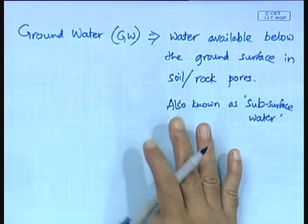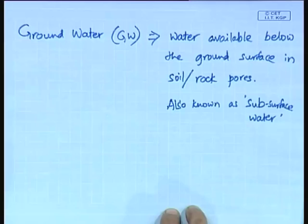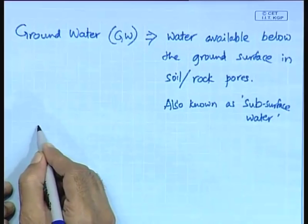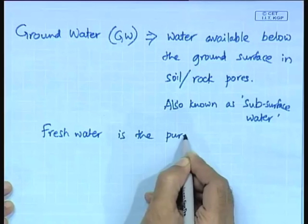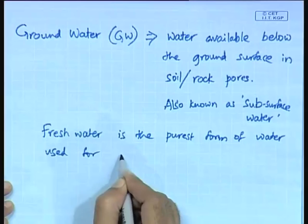We all know that to sustain life, water is the second most important requirement next only to air, and it comes even before food. Water is used for various purposes, from drinking and cooking to other uses. The water required for drinking and cooking is known as fresh water, which is the purest form of water.